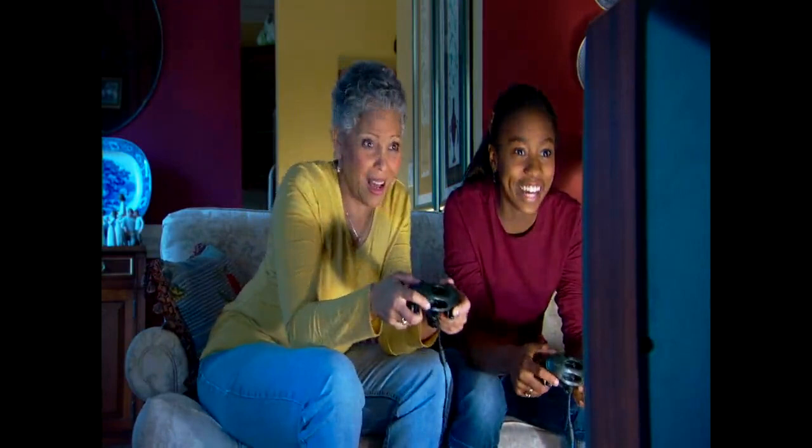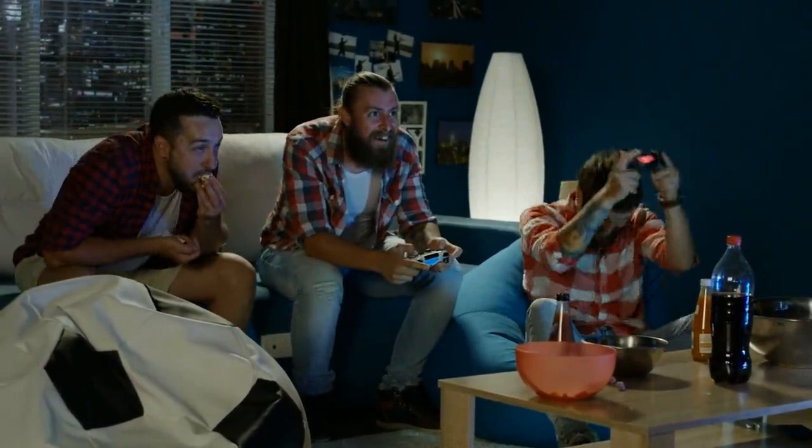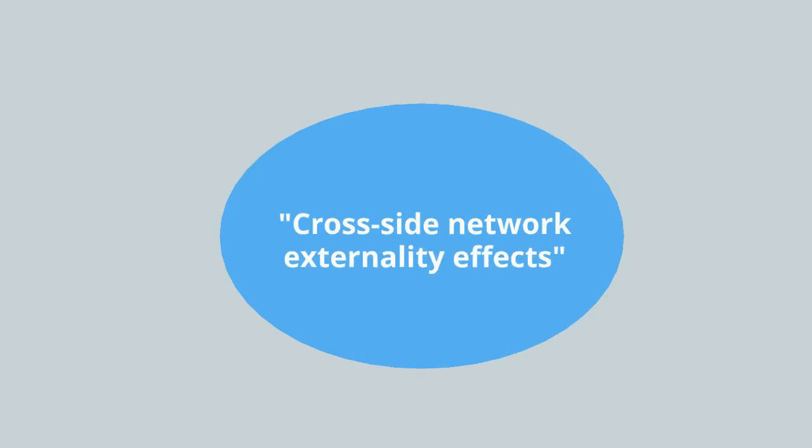For example, you might like playing video games and the video game itself is fun and valuable. However, it might be even more fun to play with your friends, so the value of the video game platform goes up with the number of your friends that are on it. These are called same-side network externality effects.